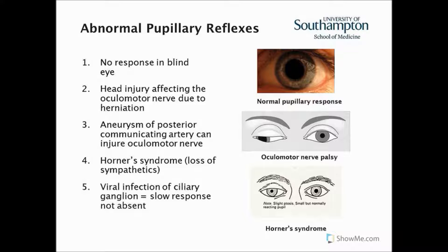First, let's mention what the normal response would be. We get a flashlight and shine it into the patient's eye. We'd expect the pupil to constrict in the eye we're shining the light into — that would be the direct response. The other eye we'd expect the pupil to constrict as well, and that would be the consensual response.